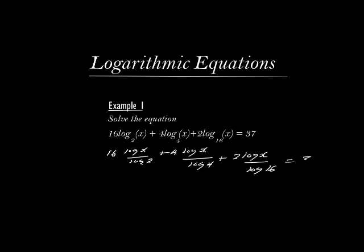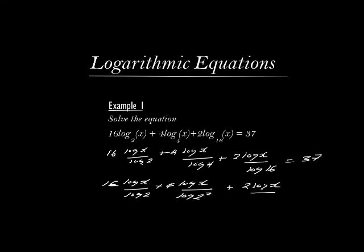Now log 4 can be written as log 2 squared, and log 16 will be log 2 to power 4. So log 4 will just be log 2 squared, and then it is plus 2 log x, and that log 16 will be log 2 to power 4. So the whole of that is equivalent to 37.